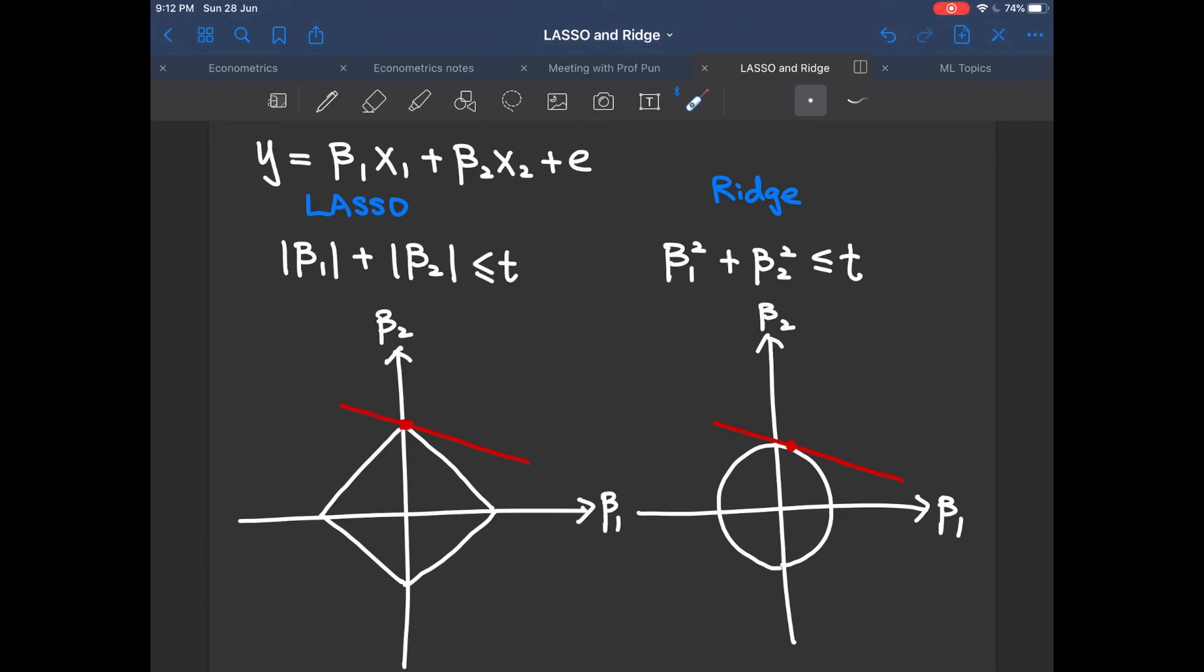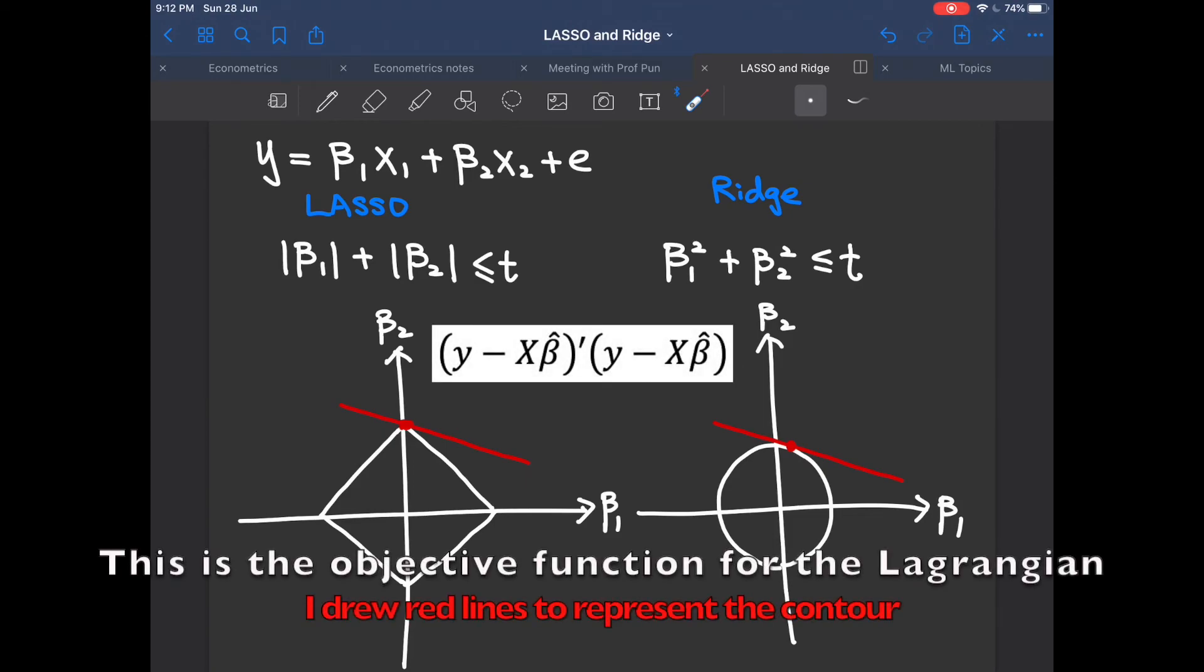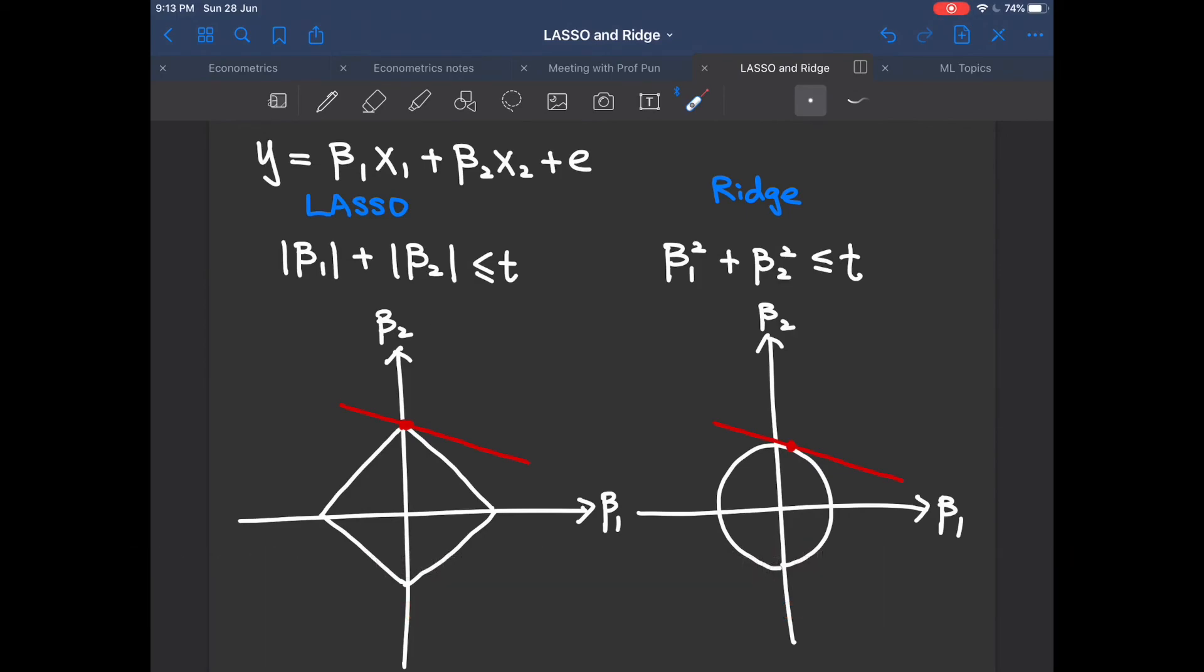As you can imagine, it is harder for a contour line of the function y minus x beta hat transpose multiply y minus x beta hat to hit the circle when either beta 1 or beta 2 is 0.